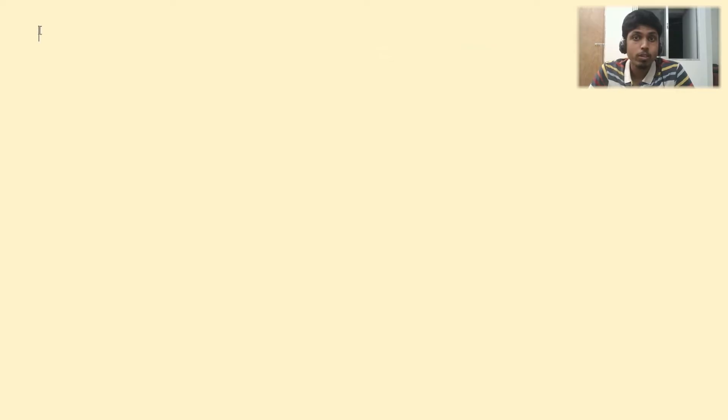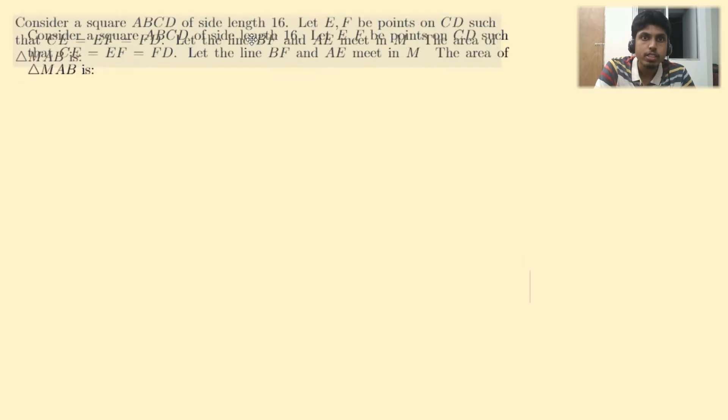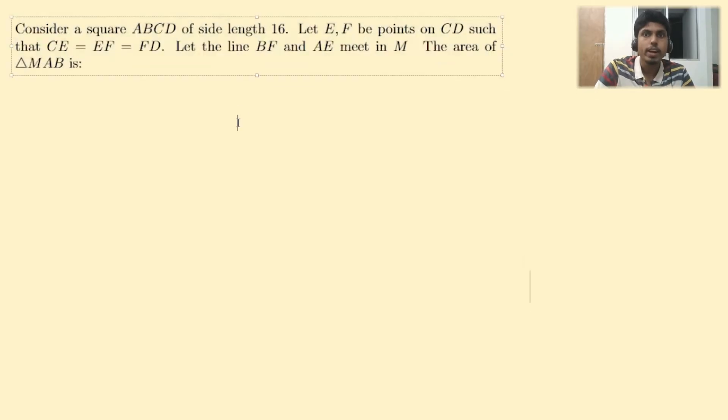Let's solve problem number 12 of IOQM 2024. Here is the problem, which discusses a square ABCD of side length 16. Let E and F be points on CD. Let me insert the diagram that we are discussing here.